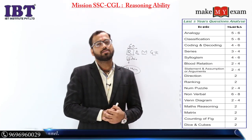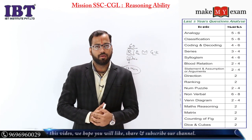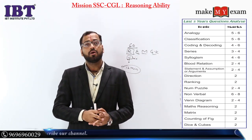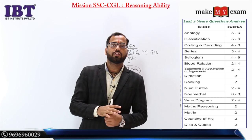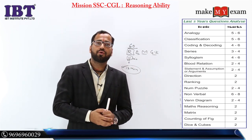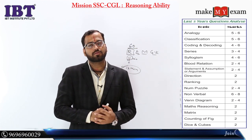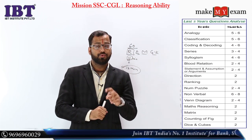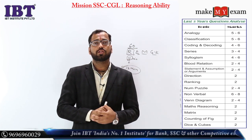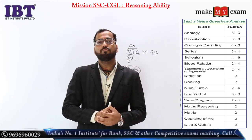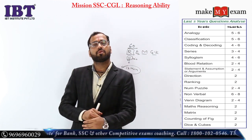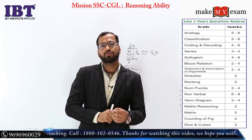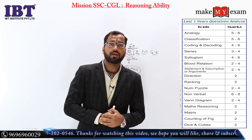ध्यान दीजिए, last 5 सालों के papers की बात करें तो analogy के 6 से 8 marks के questions आये हैं। Classification के 6 से 8 marks के questions रहे हैं। Coding-decoding के 2 से 4 marks के questions रहे हैं। Syllogism के कम से कम 2 questions - यानी 4 marks के लिए। Series के 2 से 3 questions - 6 marks के लिए। Non-verbal - paper cutting, paper folding, water image, mirror image - just IQ लगाना है, within 20 seconds वो questions हो जाते हैं।